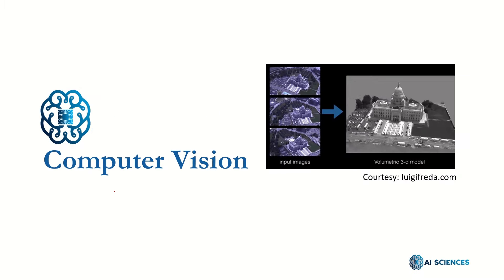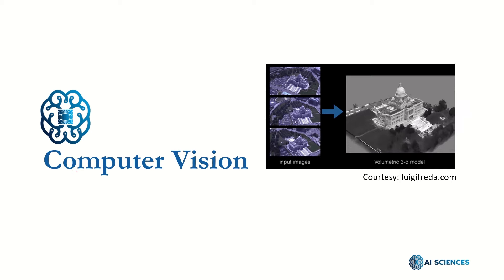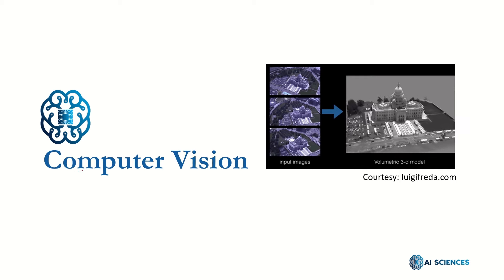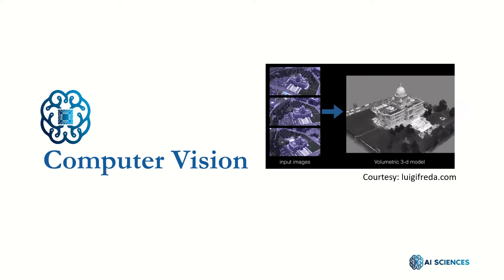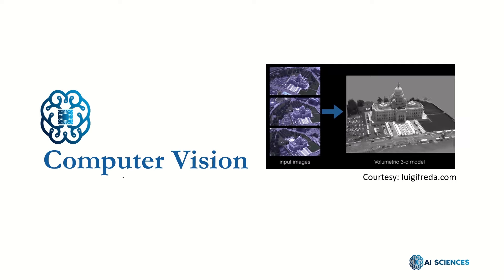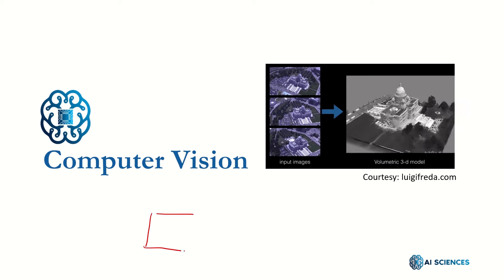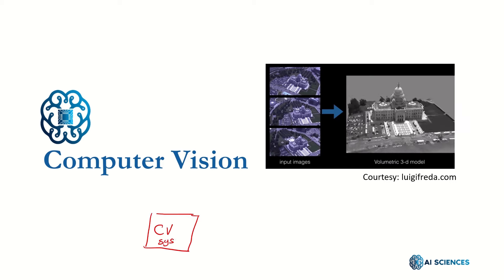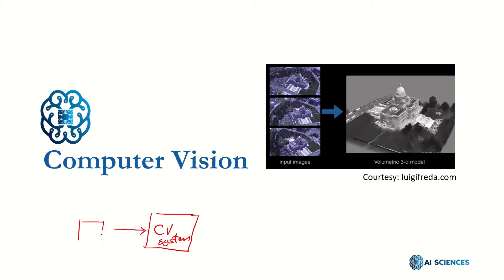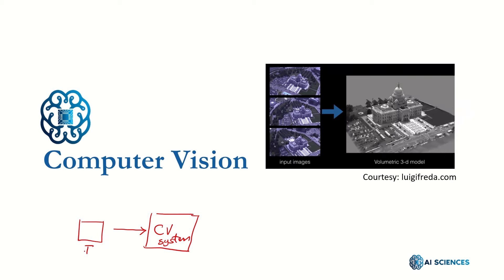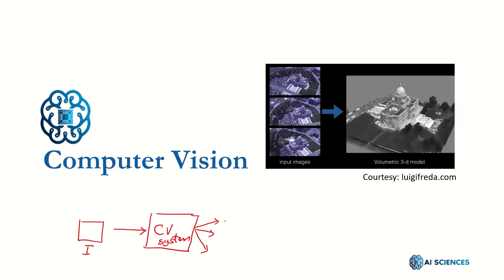First of all, what is computer vision? In computer vision, consider a computer vision system — it takes an image or maybe multiple images, and this computer vision system basically outputs a bunch of symbols. The output of a computer vision system is not necessarily another image.